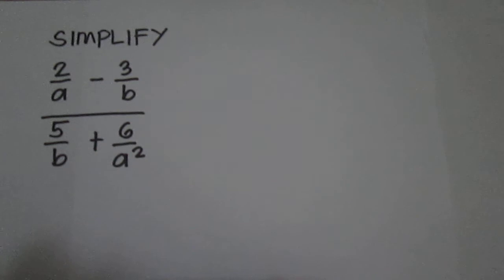Simplify 2 over a minus 3 over b, all over 5 over b plus 6 over a squared.